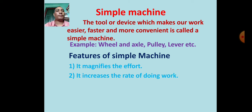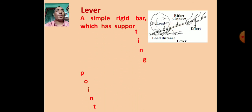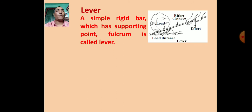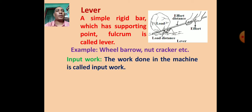Features continued: (3) it changes the direction of applied force, (4) it makes our work convenient. A lever is a simple rigid bar which has a supporting point called a fulcrum. Examples include the wheelbarrow and nutcracker.